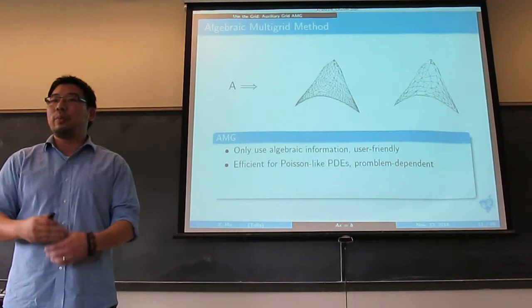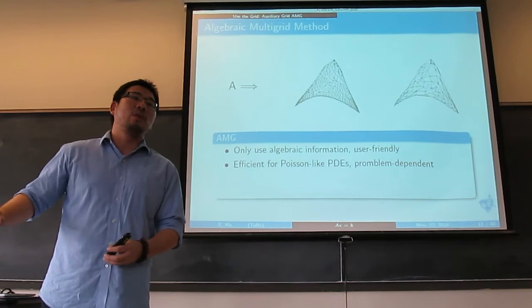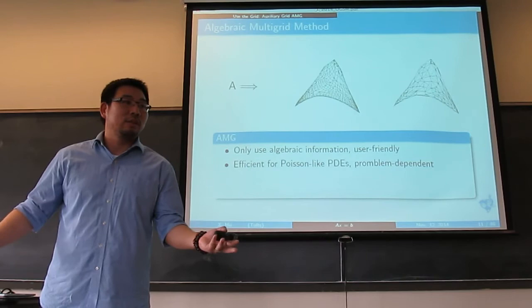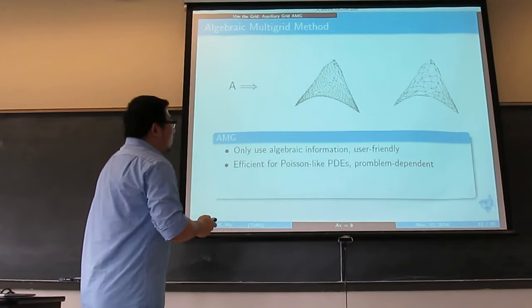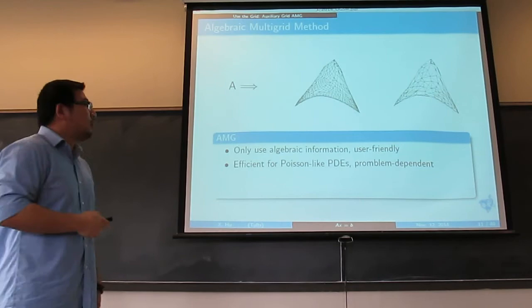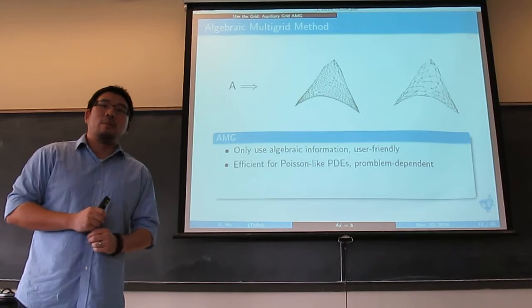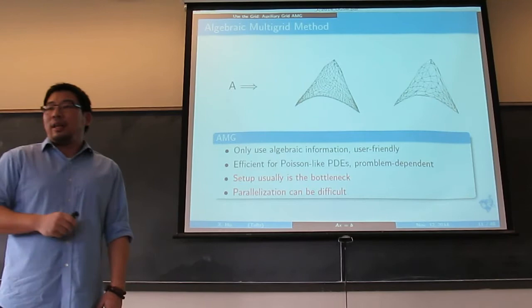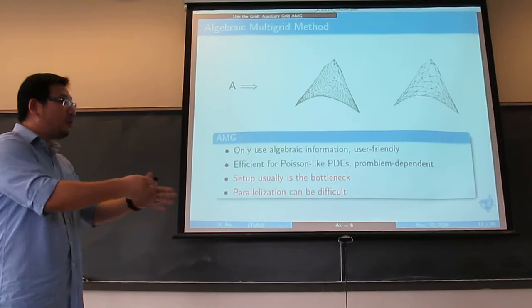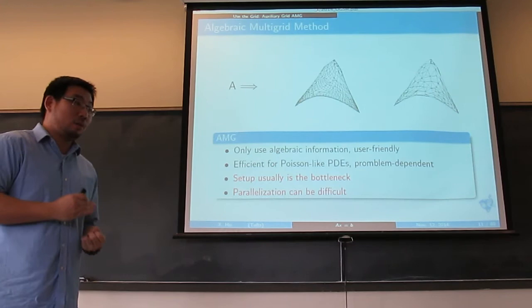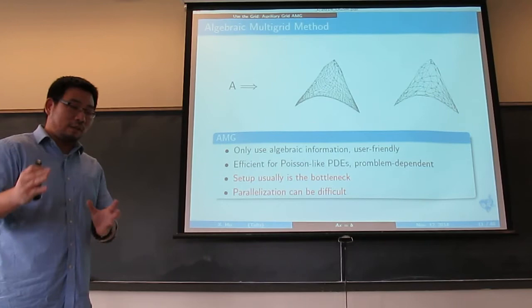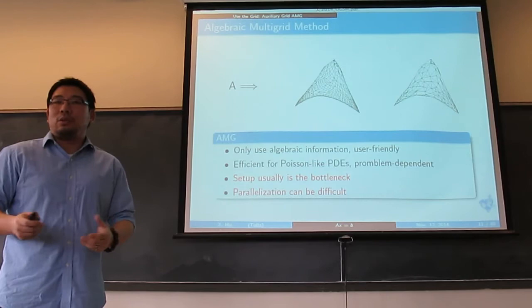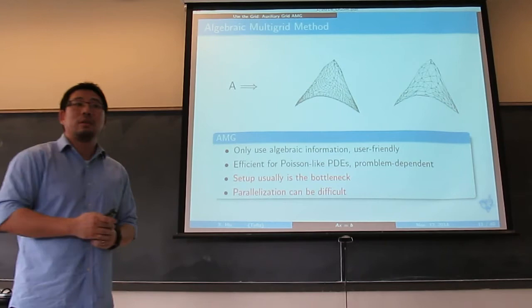AMG only uses algebraic information, which makes the method user-friendly because you don't need the geometric grid. The drawback for AMG is: first, the setup — you need to set up those graphs, which can be a bottleneck. The quality of how you get the coarse graph affects performance. Second, parallelization is difficult because without a structured grid, those are unstructured graphs.